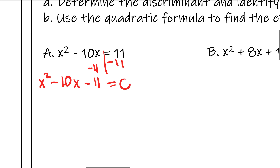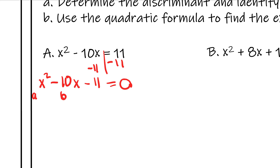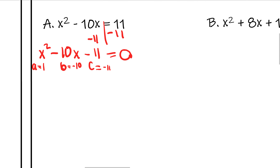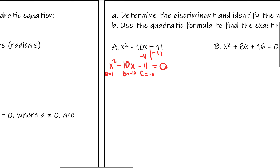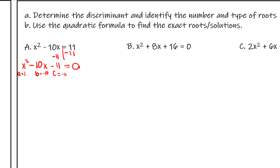Now that it's in standard form, we can identify a, b, and c. A is 1 because the coefficient of x squared is 1. B is negative 10 because it says minus 10. And c is negative 11 because it says minus 11. So the first thing we need is to use our discriminant, which is b squared minus 4ac, to determine the number and types of roots.